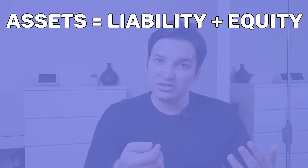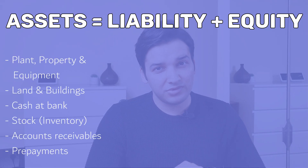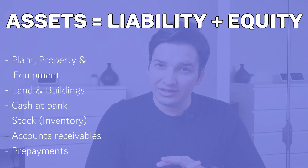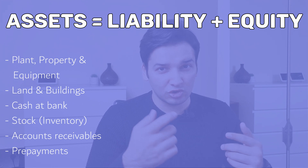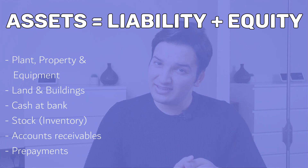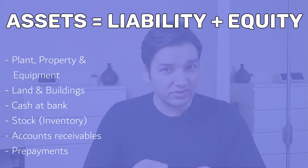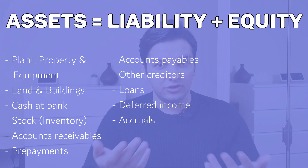Within an asset you can have plant, property and equipment, land and buildings, cash at the bank, stock which is also known as inventory, accounts receivable which is also known as trade receivables, and prepayments.